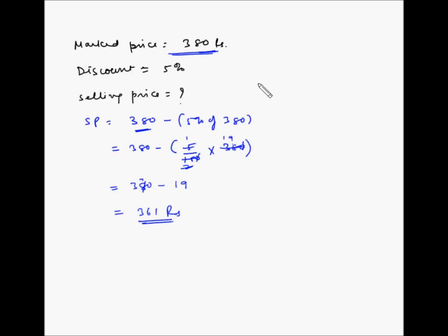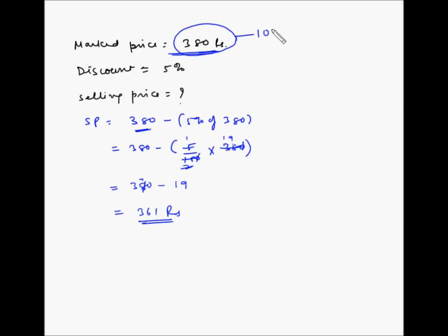Now let's look at an alternate method of calculating this. We know that the discount is 5% on rupees 380. If we consider the full marked price as 100% and the discount is 5%, then the selling price is going to be the remaining 95%.